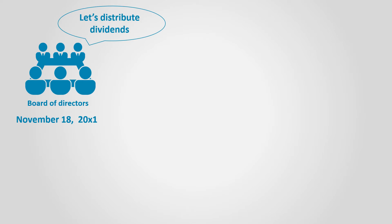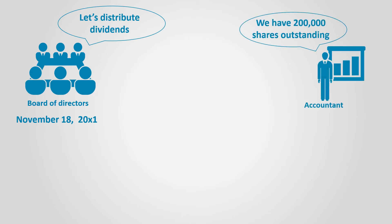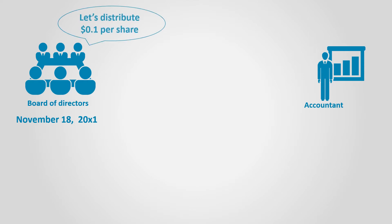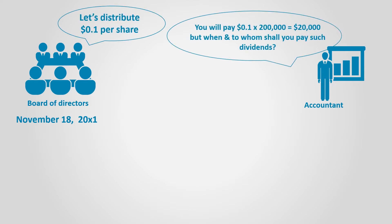Let's assume that on November 18, 2000 X1, the board of directors decided to declare dividends to shareholders. The business has 200,000 common shares issued and outstanding. This date is called the declaration date. The board of directors decided to distribute 10 cents cash dividends per common share. Since there are 200,000 common shares outstanding, the amount of dividends is equal to 200,000 shares multiplied by 10 cents, which is $20,000.